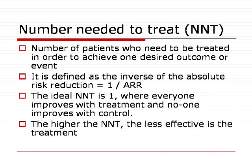Could you say a few words about the number needed to treat concept? The number needed to treat is the number of patients who need to be treated in order to achieve one desired outcome or event. It is defined as the inverse of the absolute risk reduction, so equal to one over the absolute risk reduction. The ideal number needed to treat is one, where everyone improves with treatment and no one improves with control. The higher the number needed to treat, the less effective is the treatment.